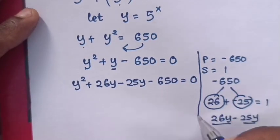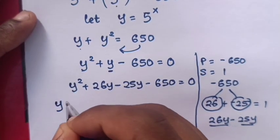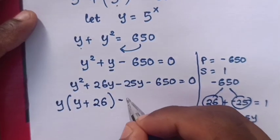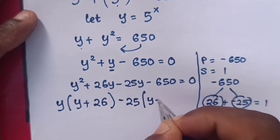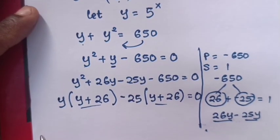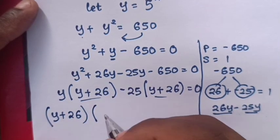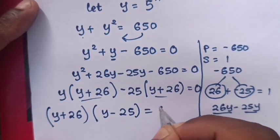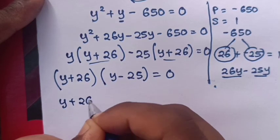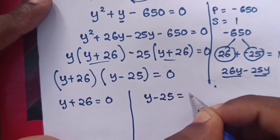From our equation, y is common, so we take y out: y(y + 26). Here, -25 is common: -25(y + 26) = 0. Then (y + 26) is common, so it becomes (y + 26)(y - 25) = 0. To get the value of y, we have two cases: y + 26 = 0, and y - 25 = 0.